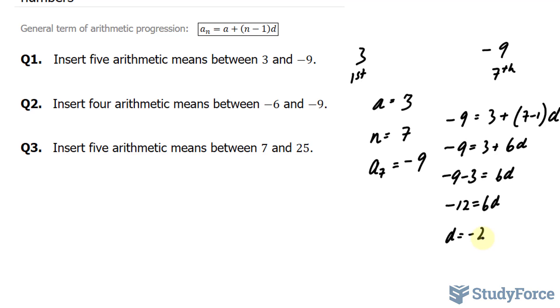And the fact that our difference is negative is expected, because we're going from a positive number down to a negative number. Therefore, to find the second, third, fourth, fifth, and sixth term, what we have to do is subtract negative 2 each time.